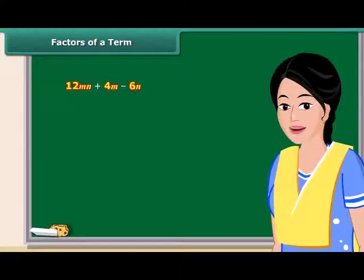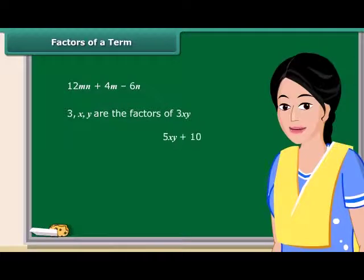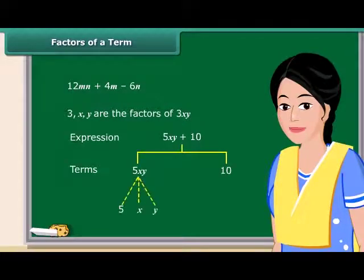A term is a product of its factors. But what are these factors? Look at this term. We say that 3, x and y are the factors of the term 3xy. Do you know we can also represent 5xy plus 10 by a tree diagram? See, the dotted lines are used here for factors and continuous lines for terms. Remember, the factors cannot be further factorized.